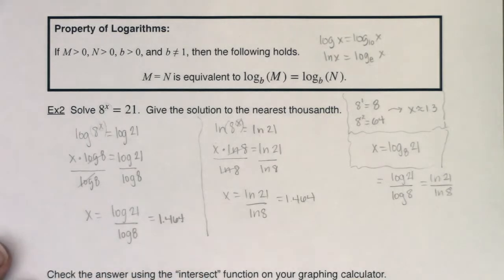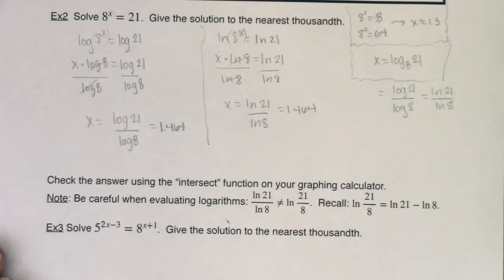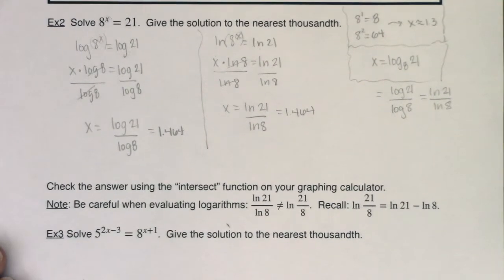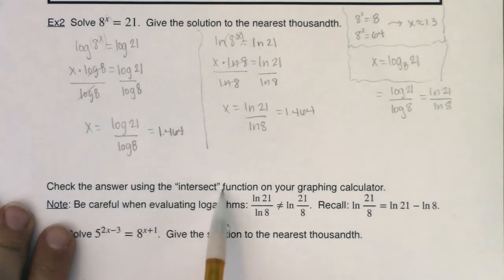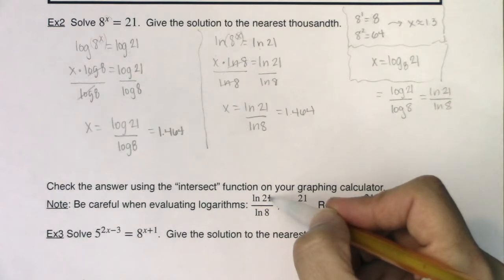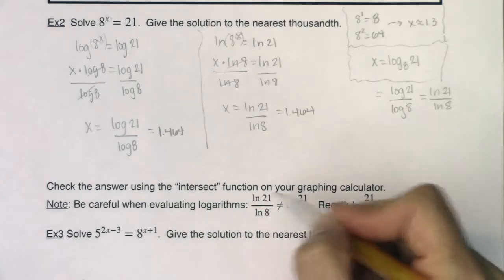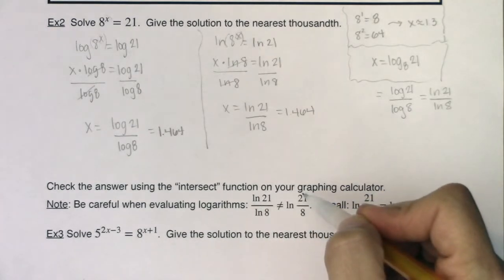Now before we leave this example behind, I do want to point out this note. We could check using the intersection function, intersect function on our graphing calculator. I'll show you that in just a little bit. But this note says, be careful when evaluating logarithms. I frequently get that students will tell me ln of 21 over ln of 8 is ln of 21 over 8. You're not allowed to combine logarithms that way.